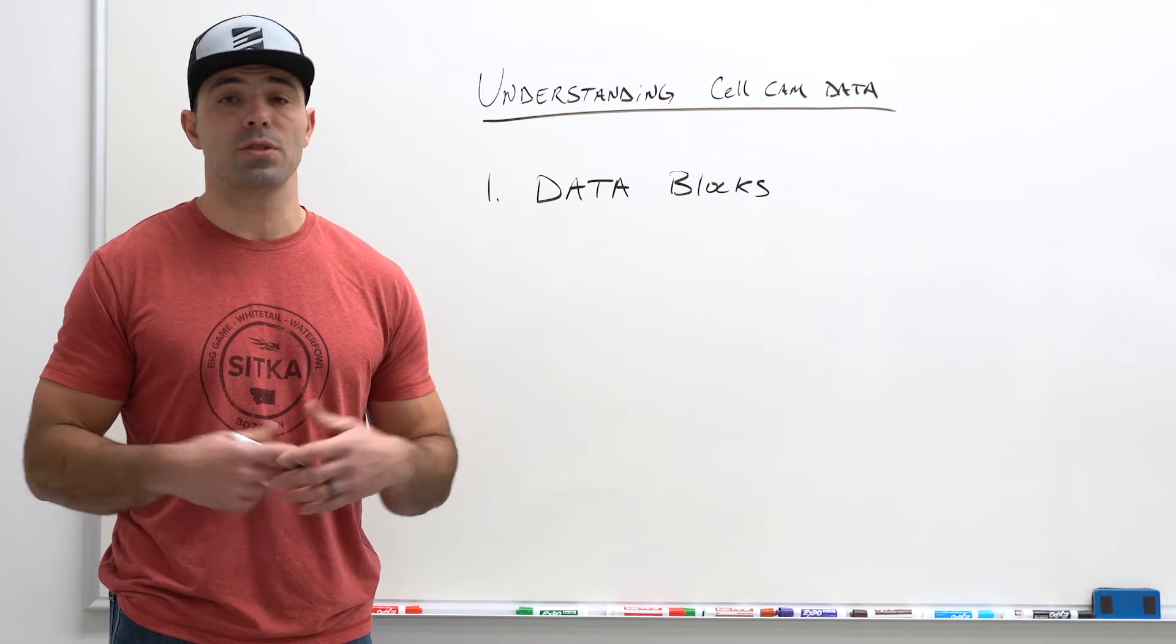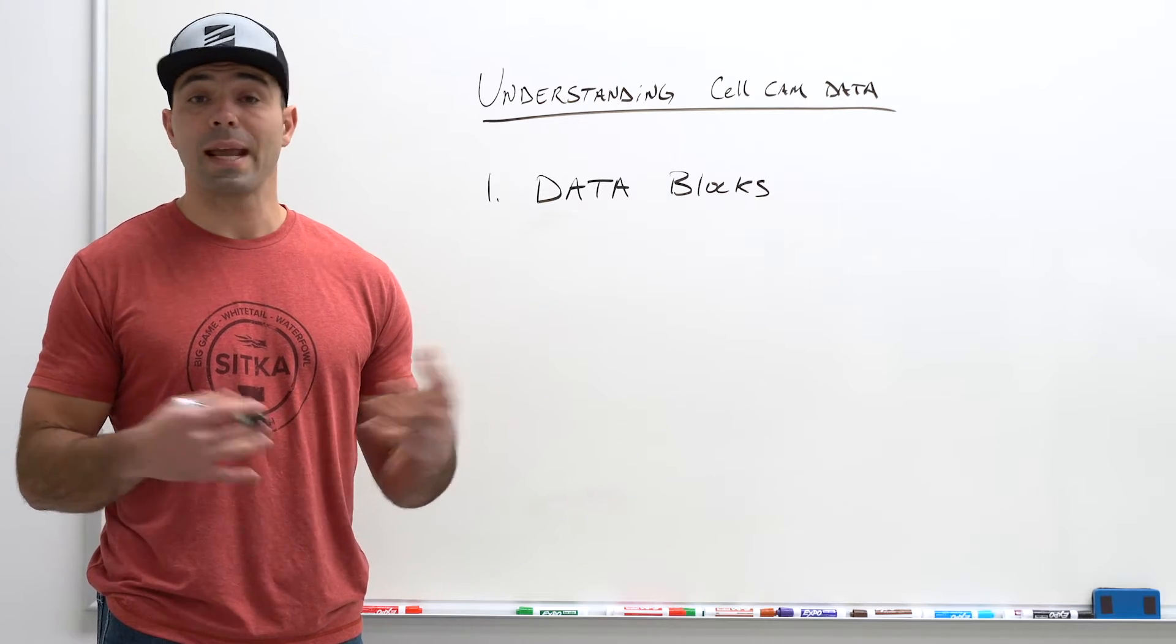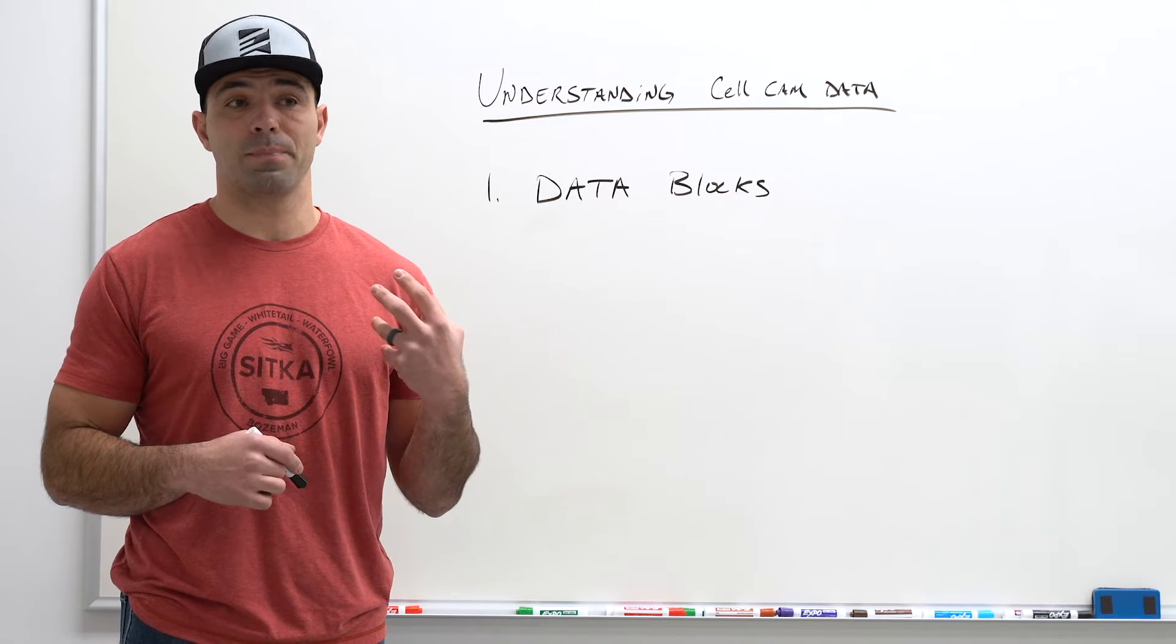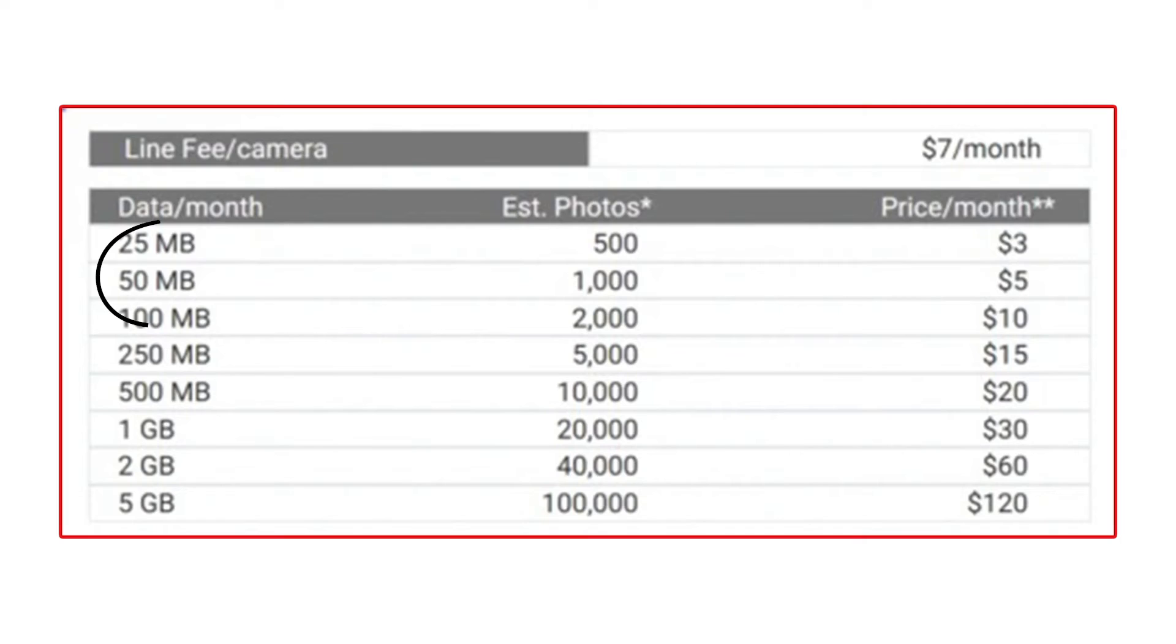If you think that camera is going to get 200 pictures a week, that's 800 pictures a month. You probably want to end up with a plan that's going to be about 50 megabytes. 50 megabytes is going to give you an estimated 1000 photos and cost you five bucks a month.